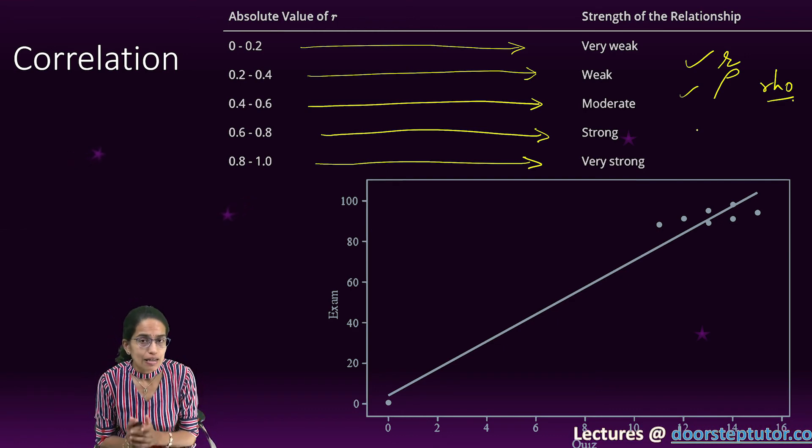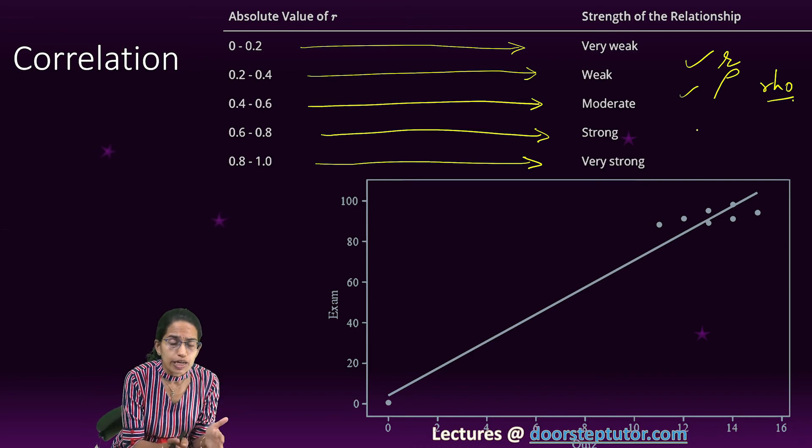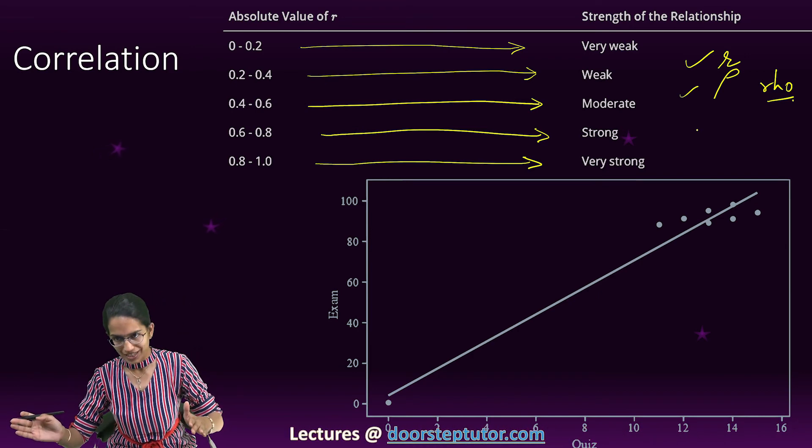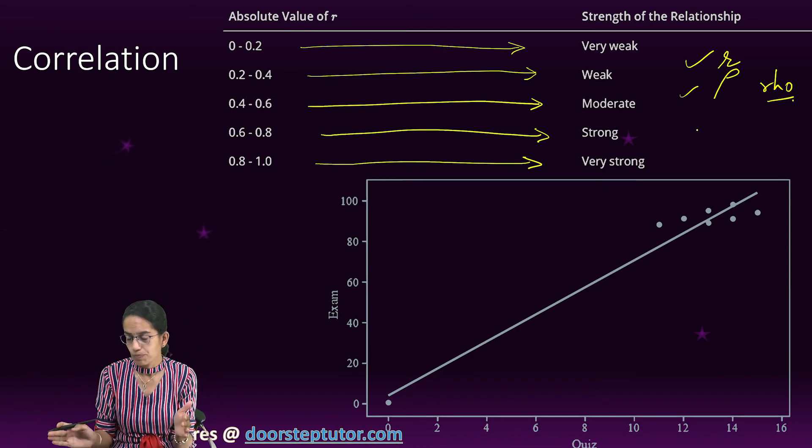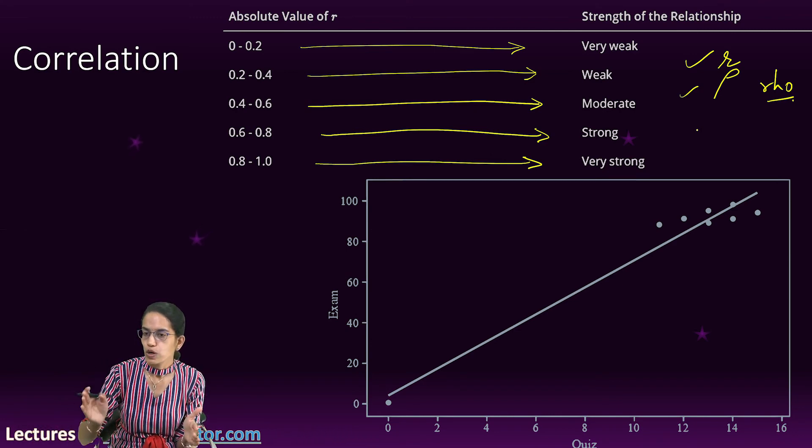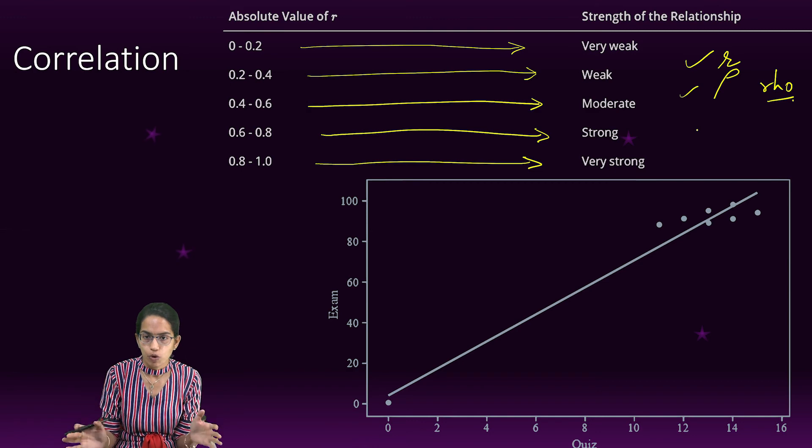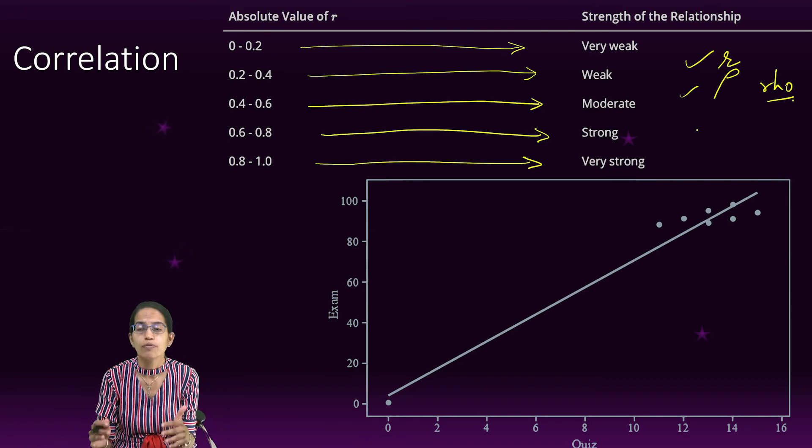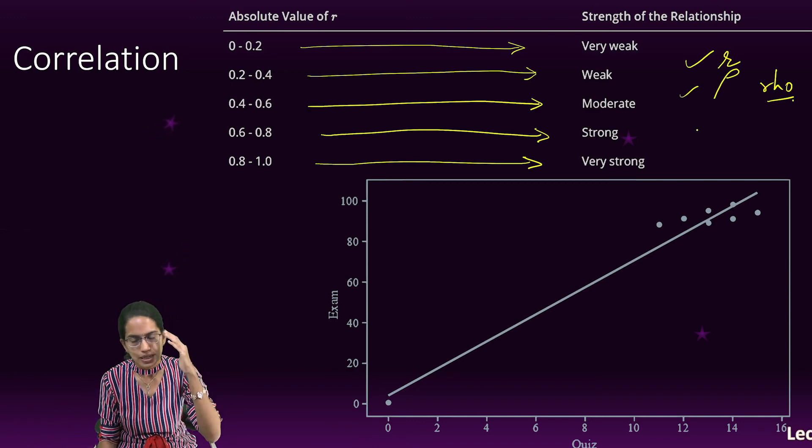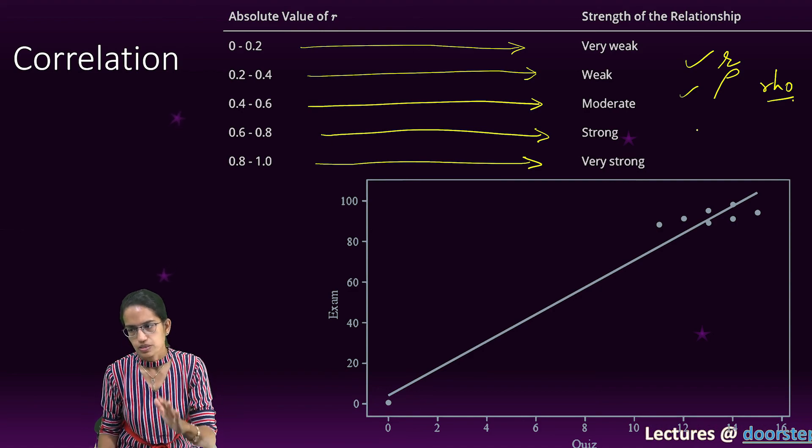But our aim is to understand where to use what kind of correlation. That's extremely important - in which scenario what kind of correlation technique would be used, and the basic formulas and how it is derived through hand or manually is the basis to understand this process.